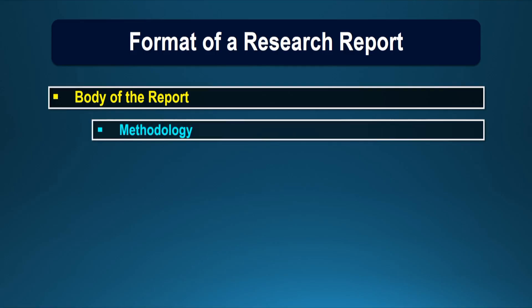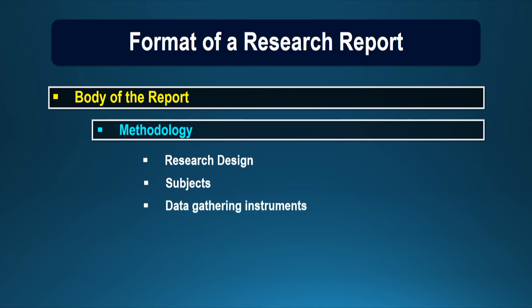The second chapter describes the methodology, where the investigator describes the research design selected, the subjects and their selection, data-gathering instruments, their validity, reliability coefficient, the procedure, and the statistical tools for the analysis of the data.